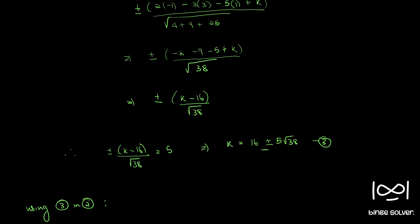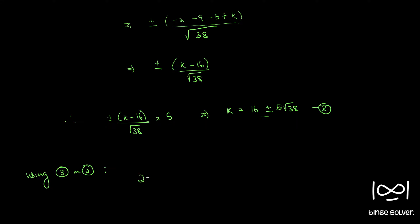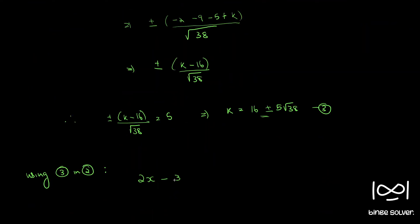So we got our k and 2 is this, so we will get our equation as 2x minus 3y minus 5z plus 16 plus or minus 5 root 38 equal to 0.